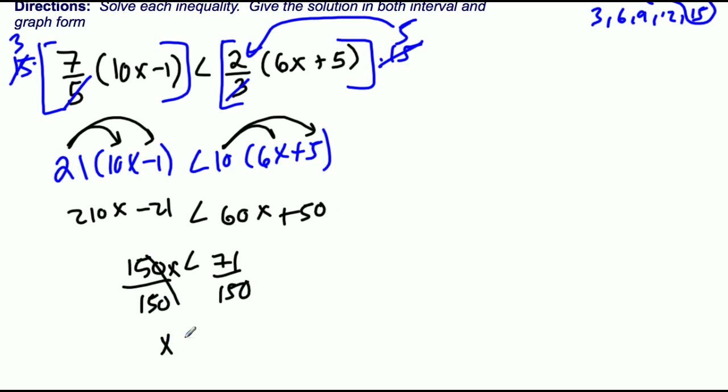So x is less than 71 over 150. You're probably thinking like, 71 over 150, what kind of number is that? Well, it's a fraction right there, so that's just the way it is.